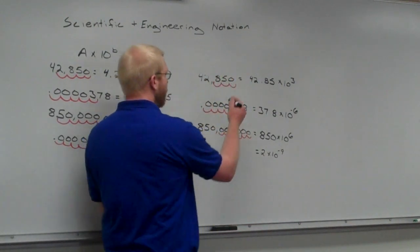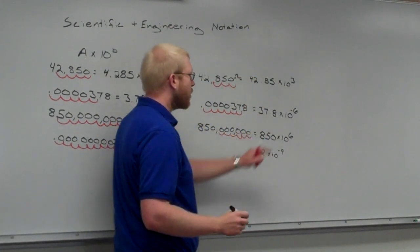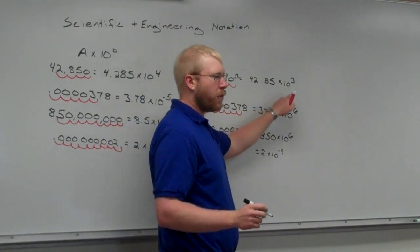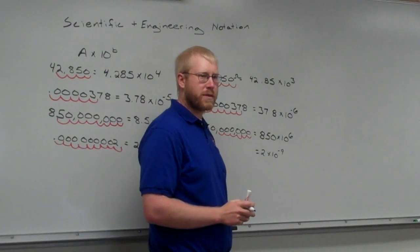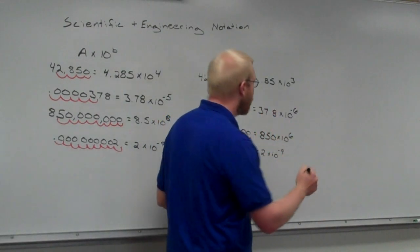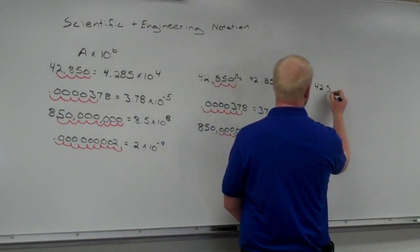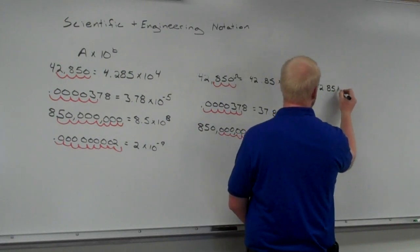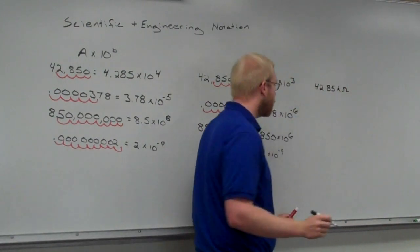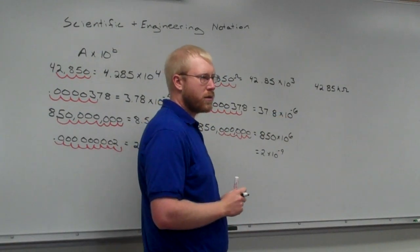But let's say we're dealing with, let's say that this was ohms of resistance that we had. So, 10 to the power of 3 is going to be what? What's the SI prefix for 1,000? Kilohm. Kilohm, yep. So, we'd go ahead and say that that was 42.85 kilohms. What about to the negative 6? Anyone have any clue? Oh, no, I did.